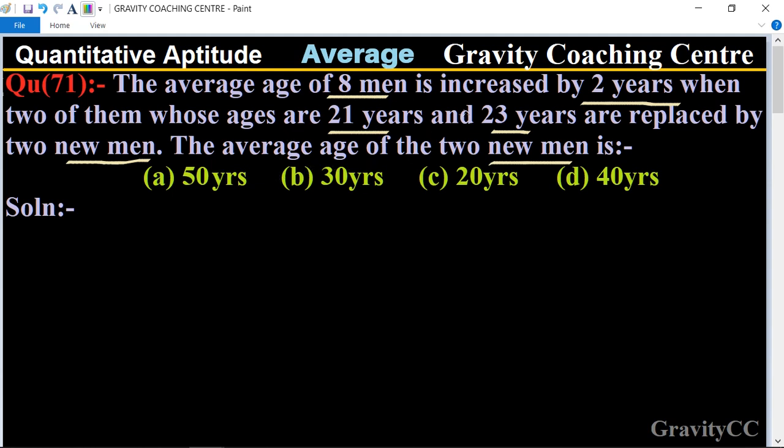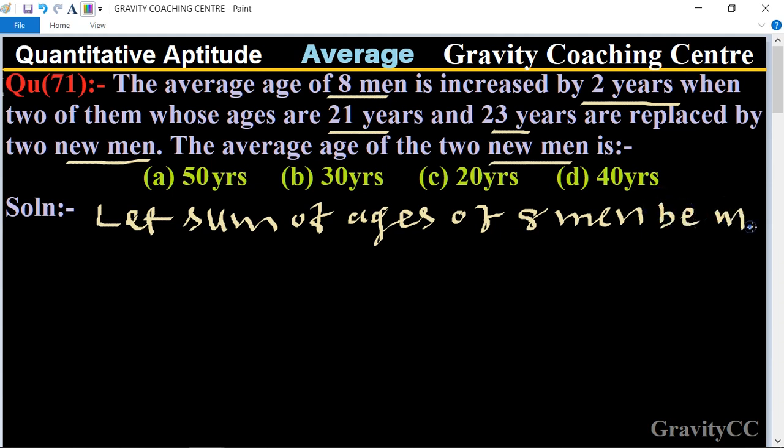In this question, first of all we let the sum of ages of eight men be m, and the sum of ages of two new men be x.